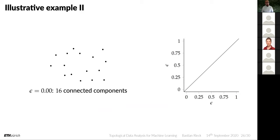Let's look at another illustrative example requiring only counting of connected components and cycles. For a graph at epsilon 0, we have 16 connected components. At epsilon 0.25, there are only 11 connected components — we mark the destruction of those connected components, all created at epsilon 0, by adding points at coordinate (0, 0.25). At epsilon 0.5 we have only one connected component, marked at (0, 0.5), and also 12 cycles — shown with a dashed line indicating cycles are being created at this threshold.